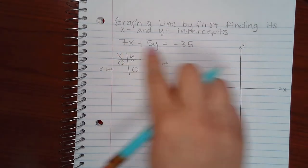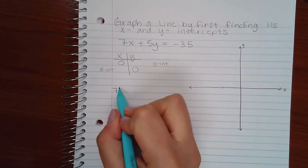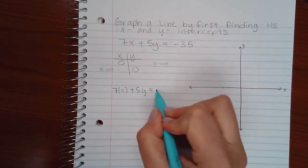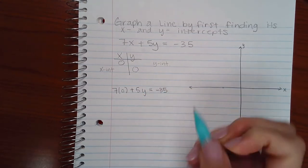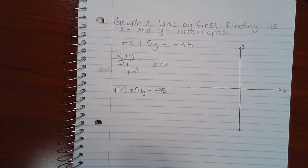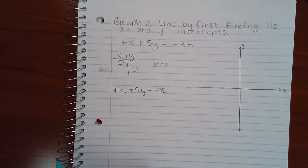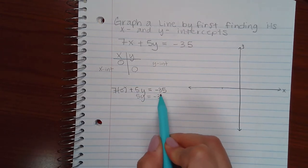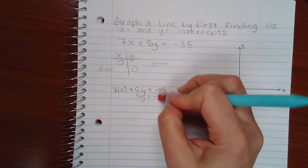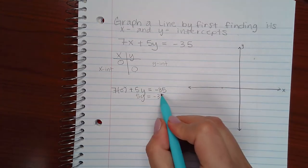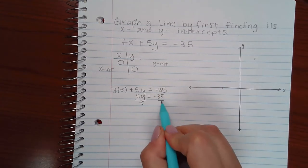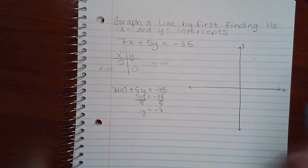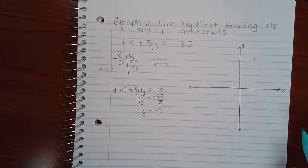So if I take my equation and plug in zero for x, you need to do them one at a time, they're two separate problems. Don't try to plug in both zeros at the same time. This would be zero and I'll end up with 5y equal to negative 35. Then divide both sides by 5 to solve for y and you get negative 7. So the y-intercept is negative 7.